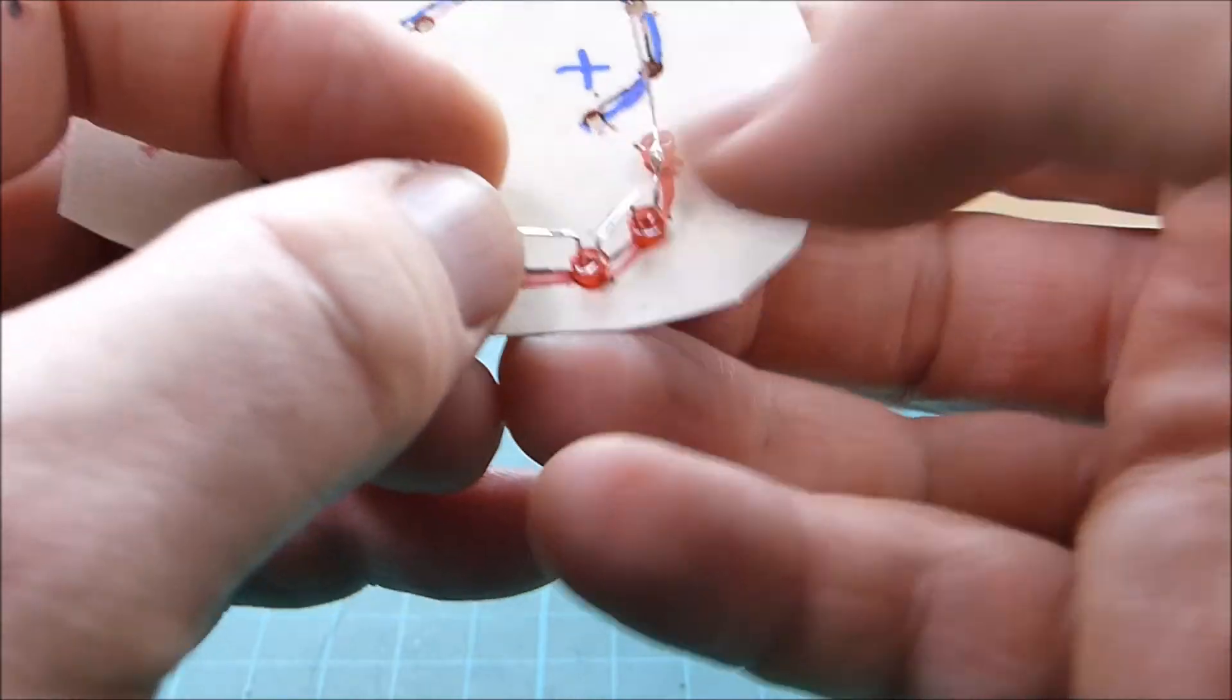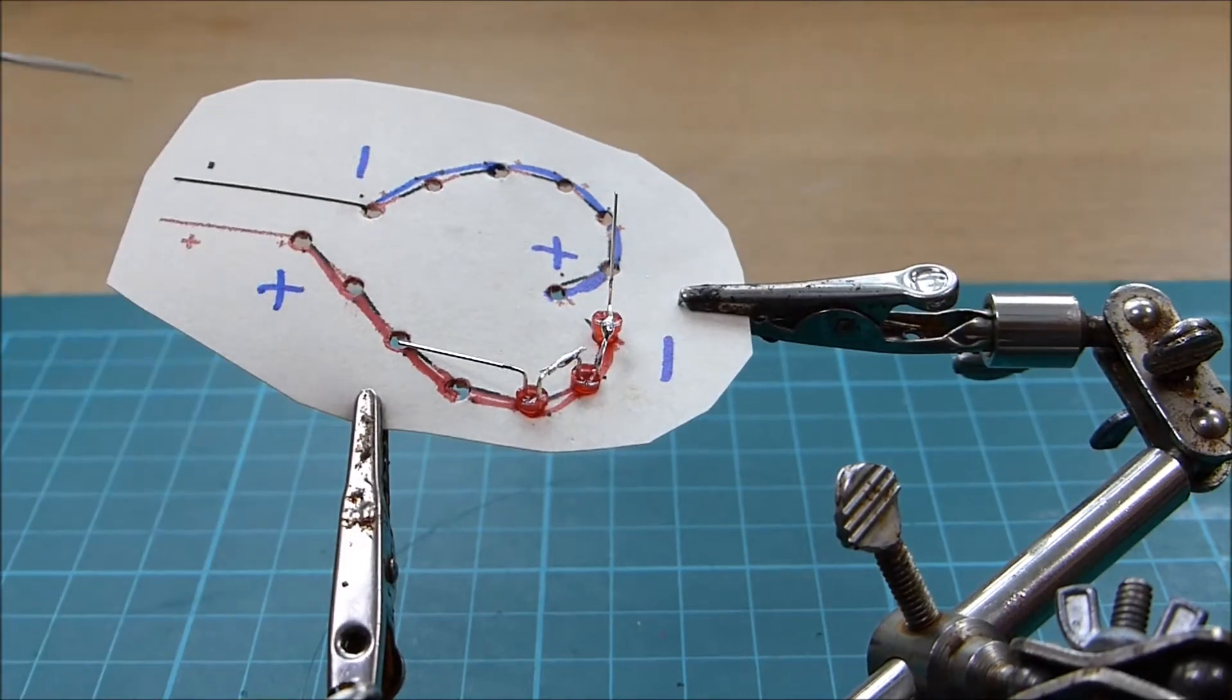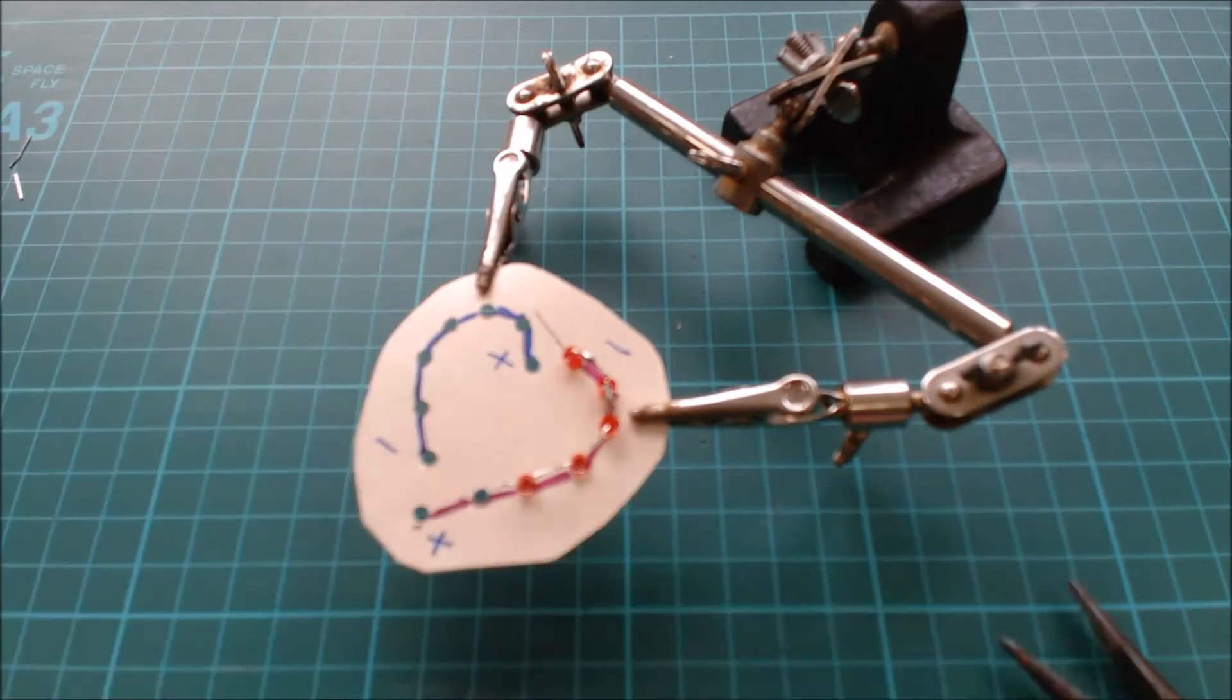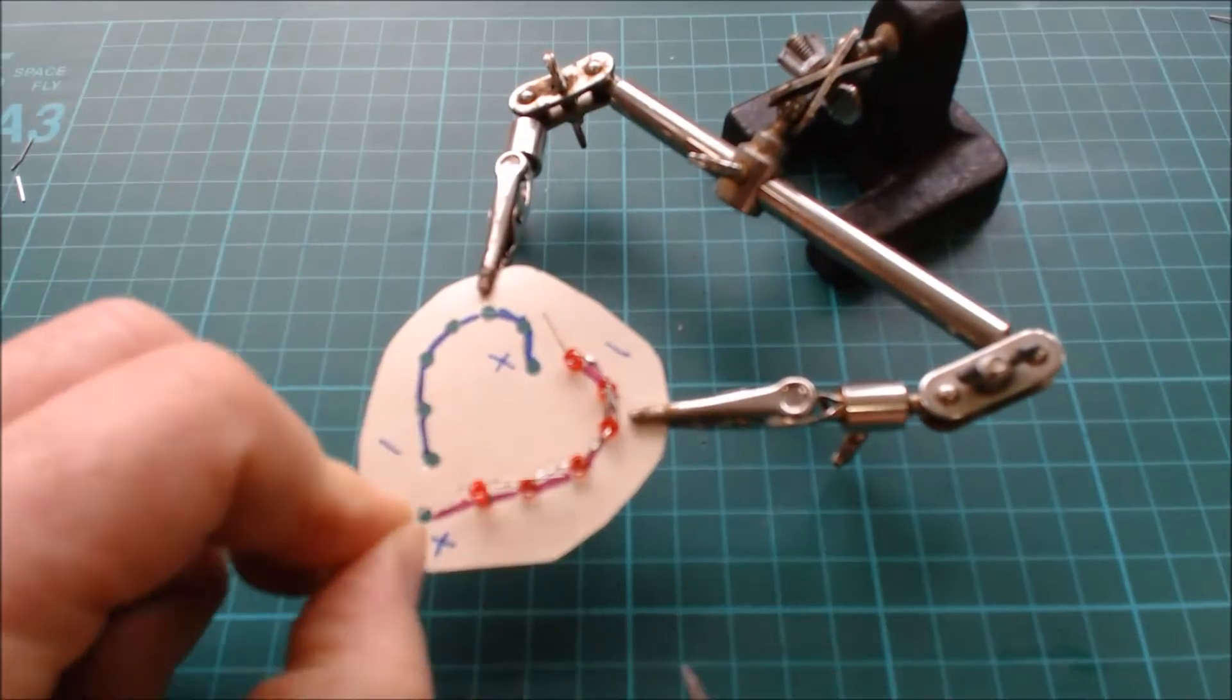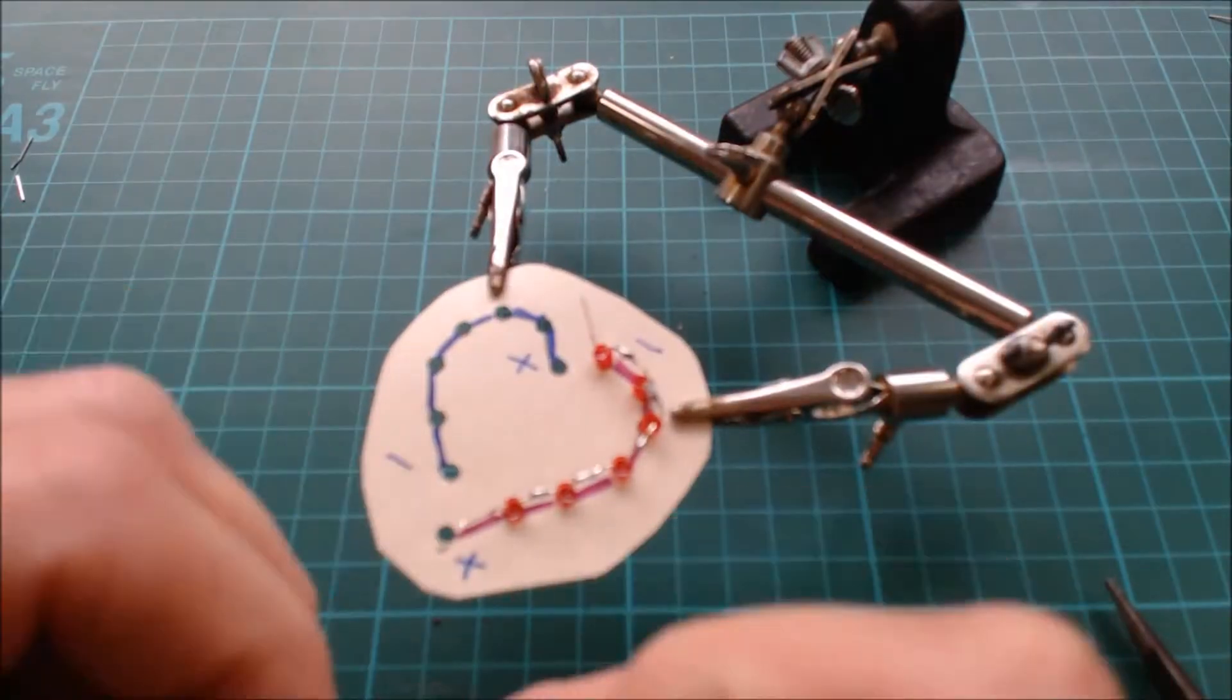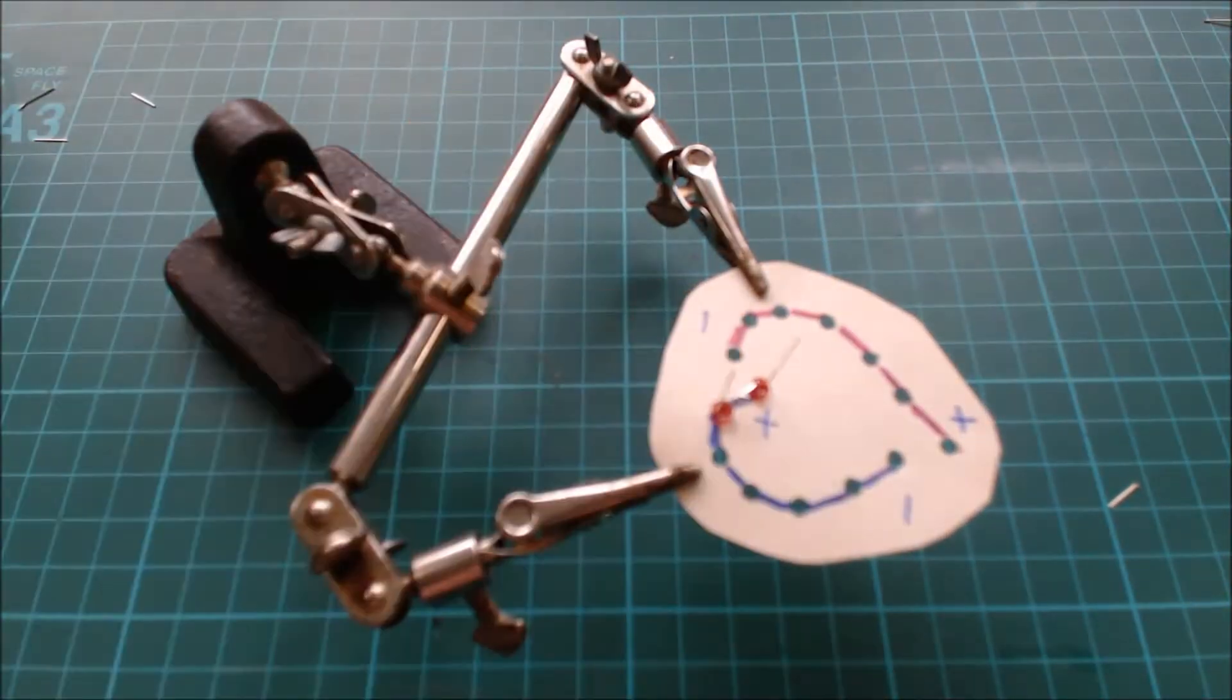So what we're creating is a string of LEDs where the long leg on one LED always connects to the short leg on the next LED. Carry on installing the rest of the LEDs. Once the red side of the LED heart is completed we can work on the blue side, just orienting the LEDs according to the template.